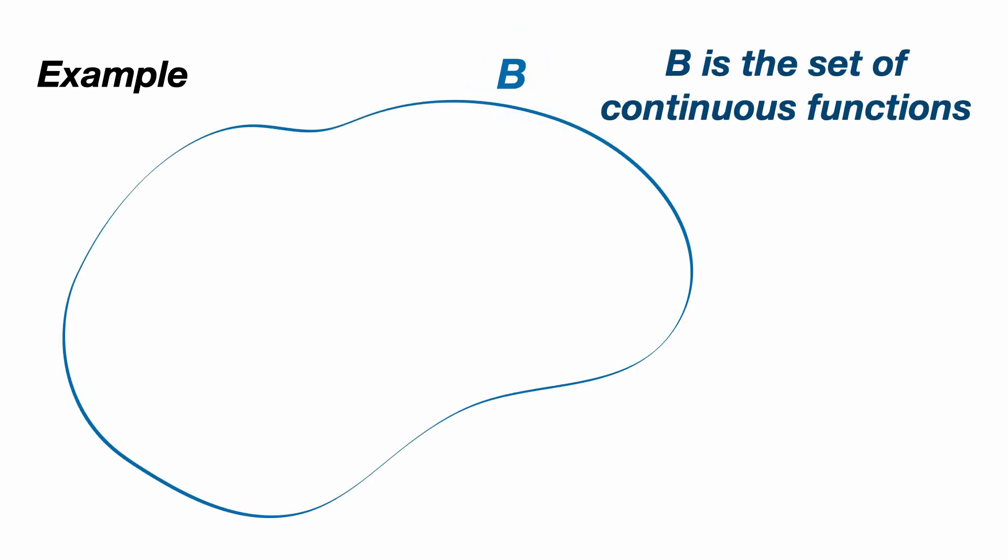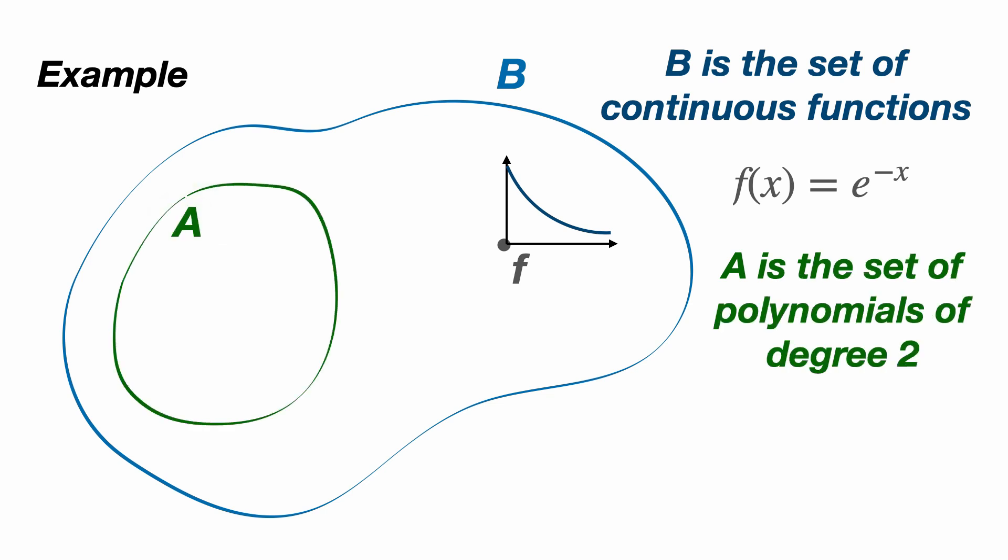The previous definitions were a little abstract, so let me give an example. Let capital B be the set of continuous functions over a given interval, and let's choose an element of capital B. Let's say F is equal to e to the minus x. Let capital A be the set of polynomials of degree 2, and notice that this is a subset of continuous functions.